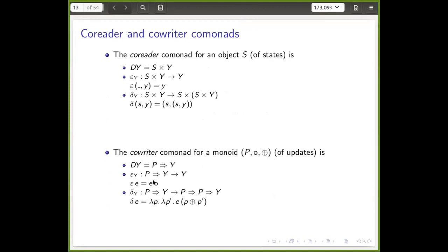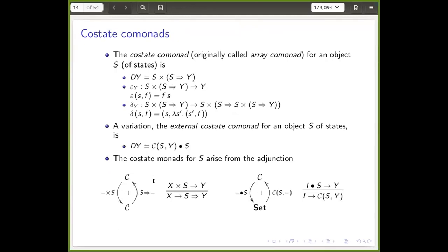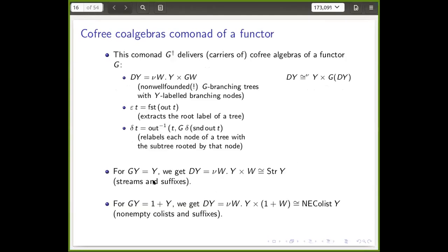These examples are important because they provide notions of environment for the types of computation we care about, like reading or writing. We also looked at the general case: the co-free co-algebra as co-monad of a functor, or the co-free co-monad of a functor. Given a functor, the co-monad applied to Y gives non-well-founded trees. In the case of the free monad it was well-founded trees; non-well-founded means paths in the tree can be infinite.